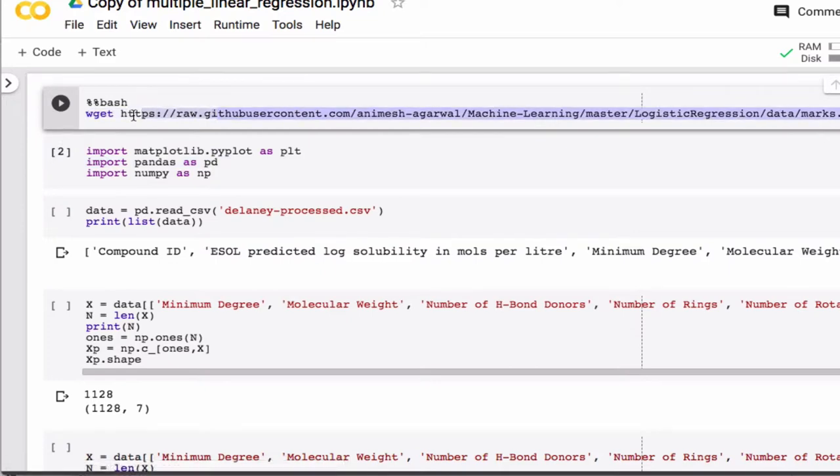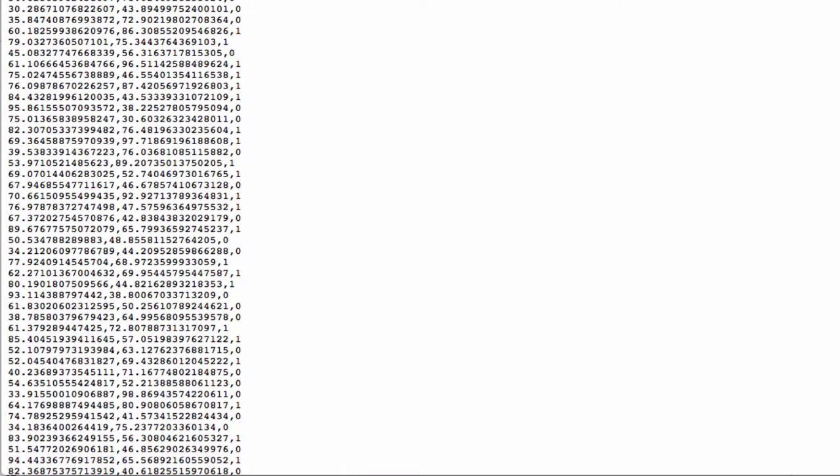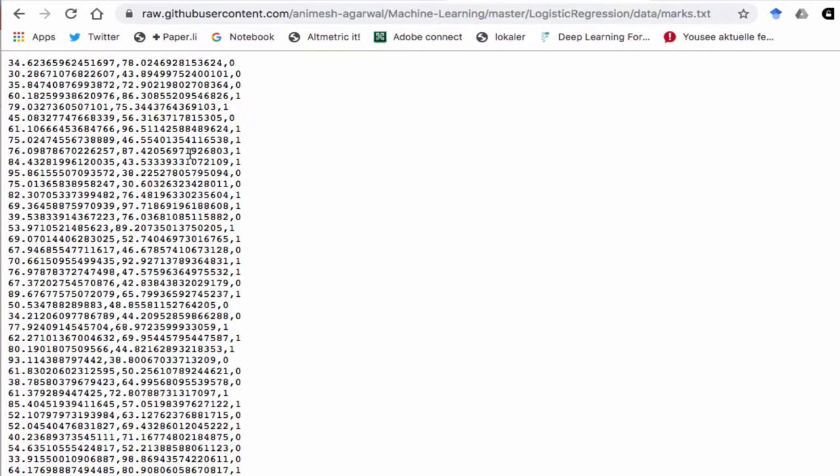We can just go in here and look at the web page. So here's exam 1 score, exam 2 score, and 0 or 1 depending on whether the student was admitted.